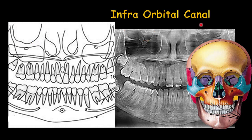The infraorbital canal starts from the inferior wall of the orbit, goes through the inside of the maxillary bone, and comes out from the infraorbital foramen. It can sometimes be detected inside the maxillary sinus.